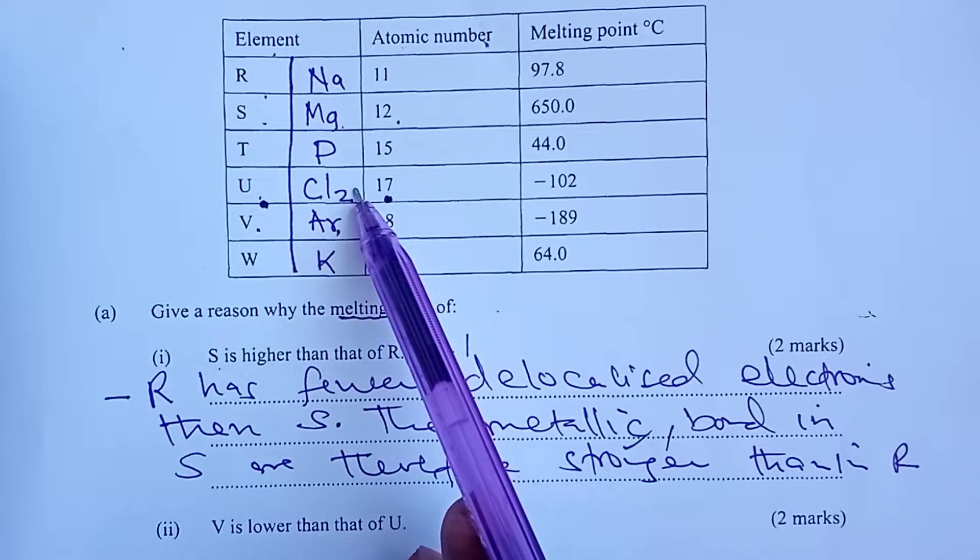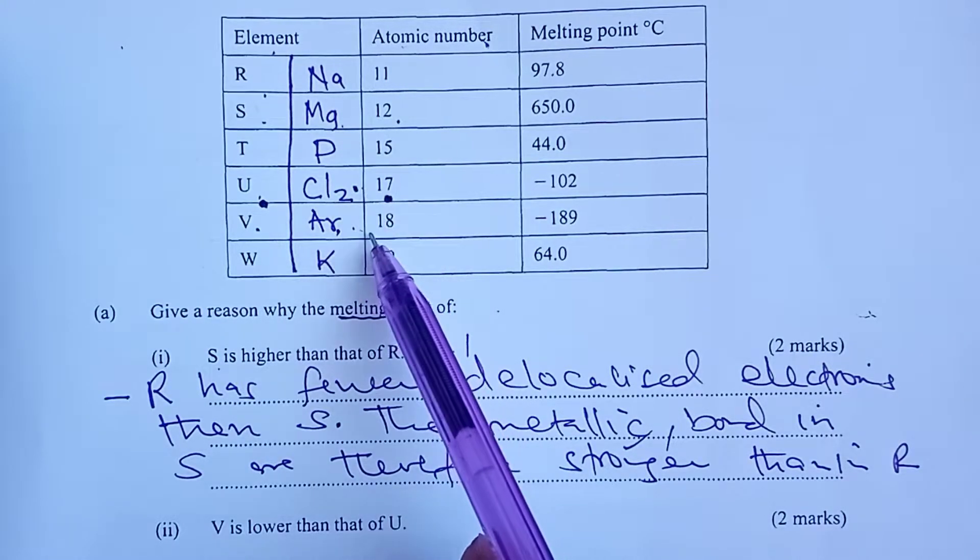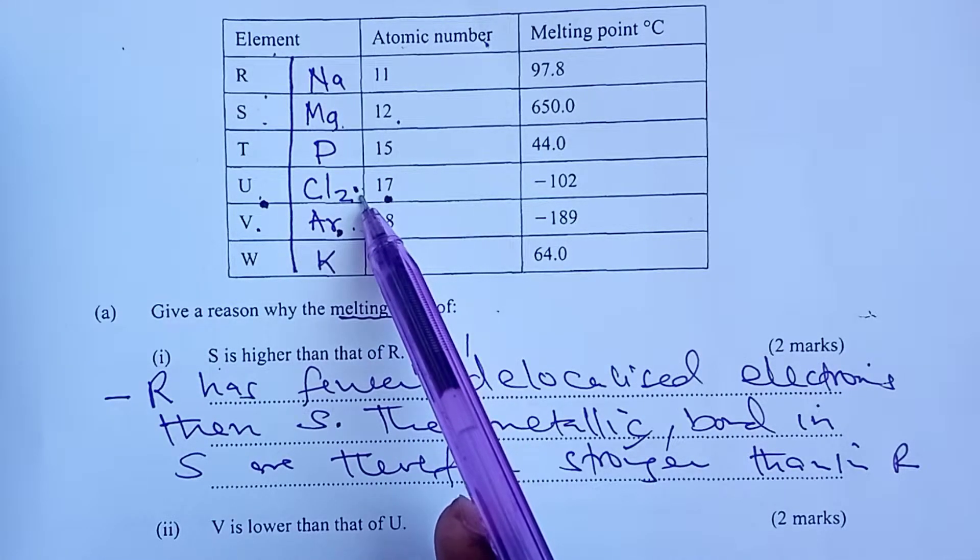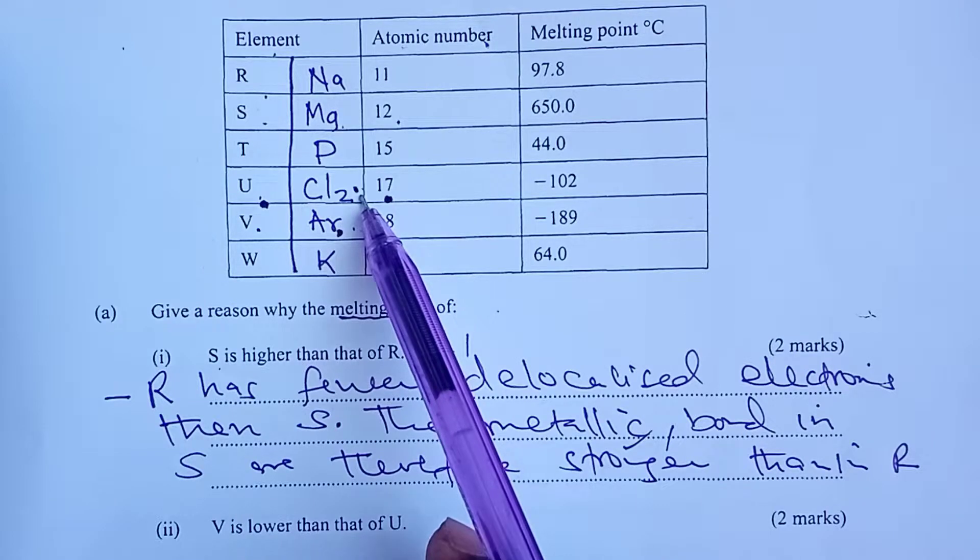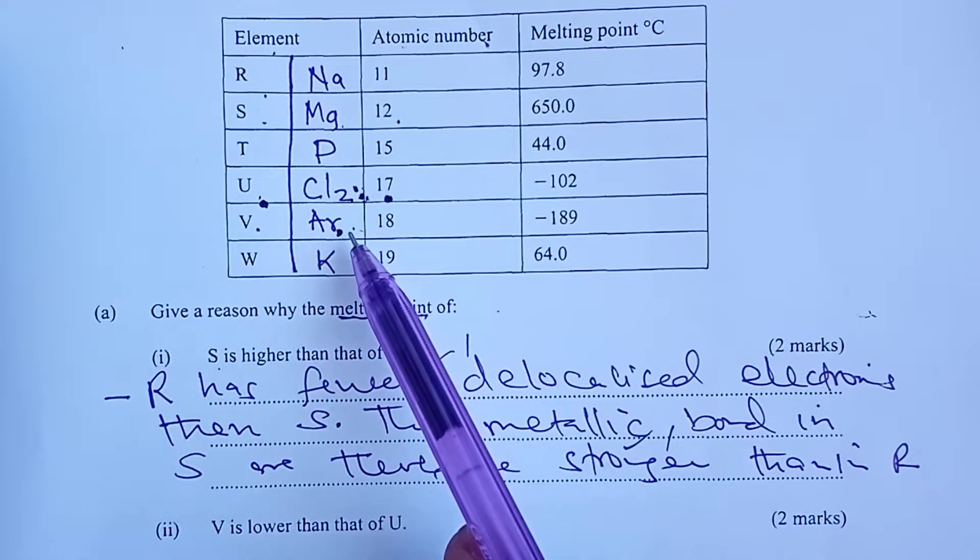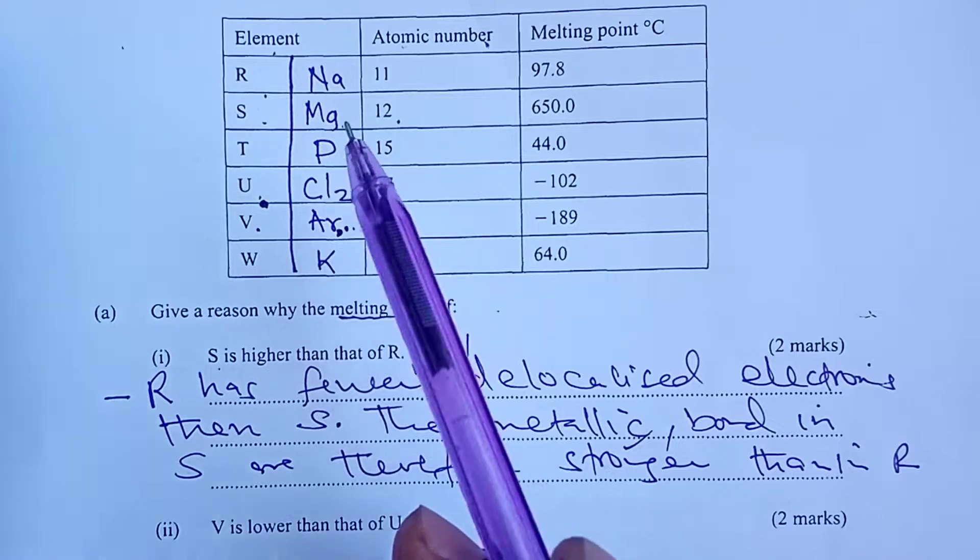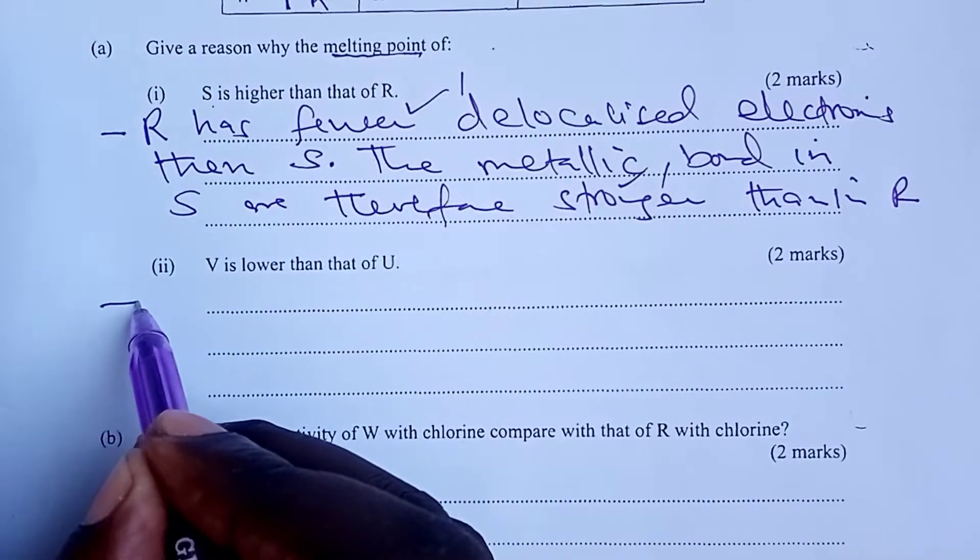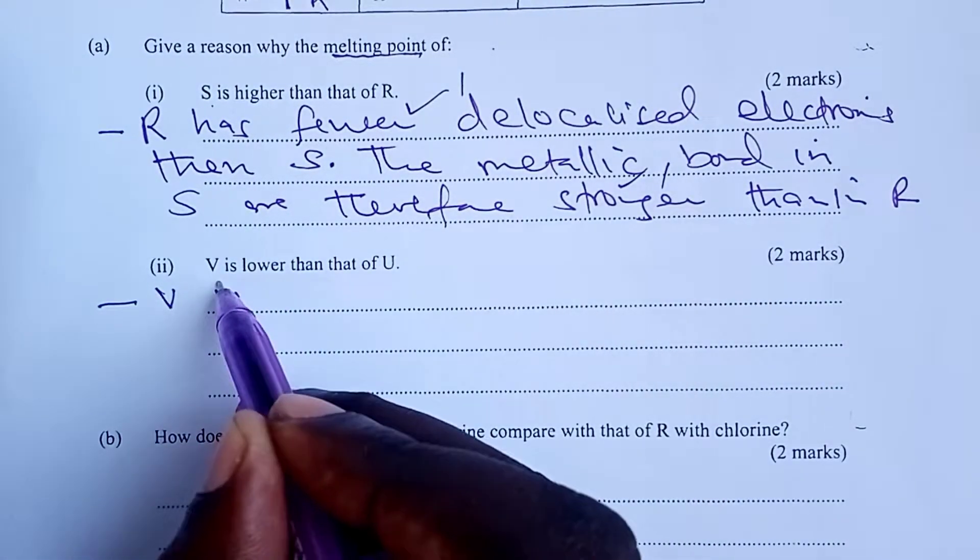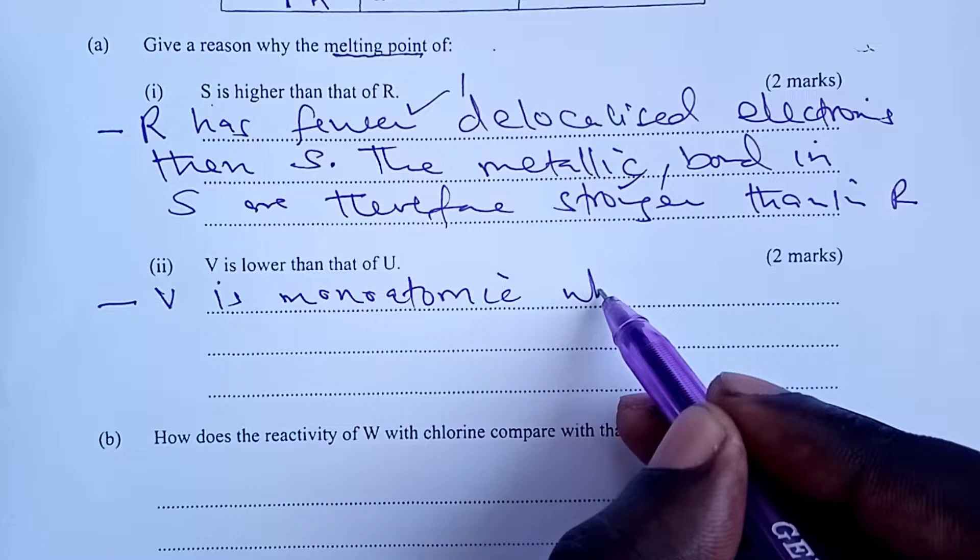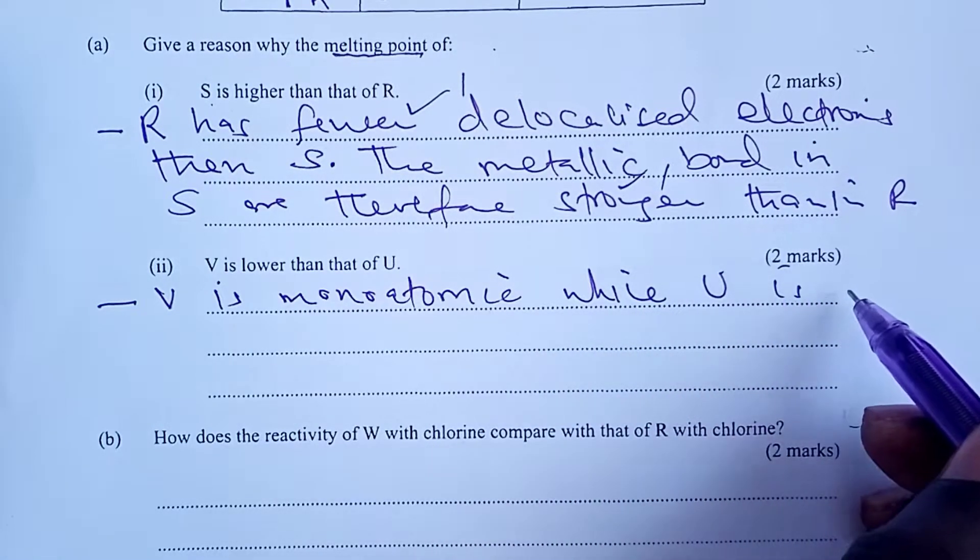This one normally exists as single atoms, what we call monoatomic gas. This one, per molecule, we have two atoms. You expect the van der Waals forces in chlorine to be stronger than those in argon. That is what was expected as the answer to the second part.